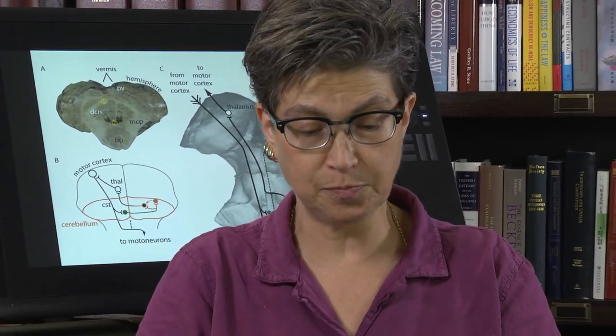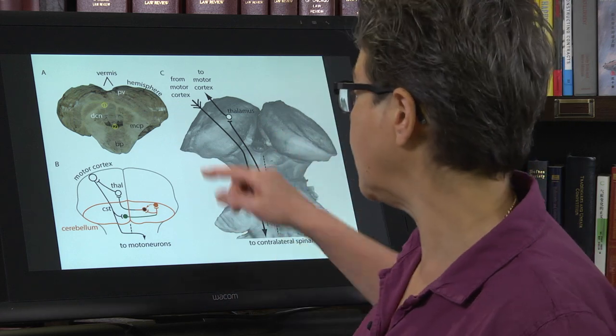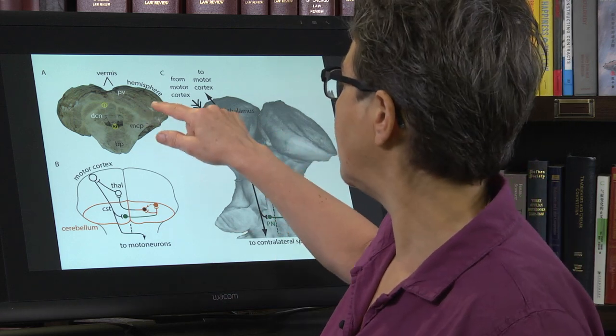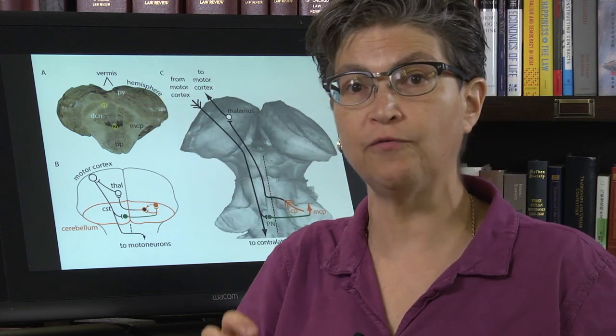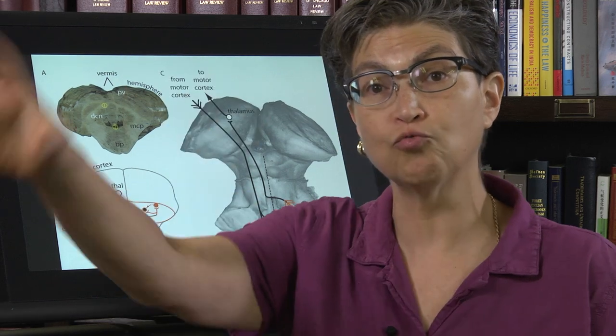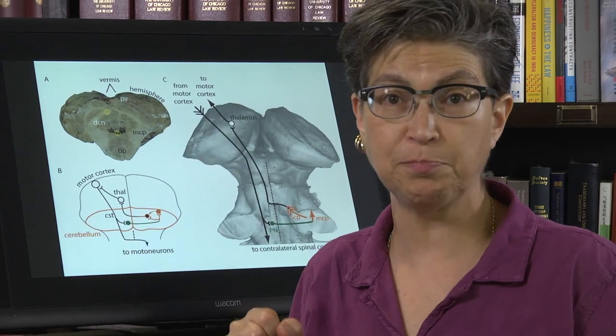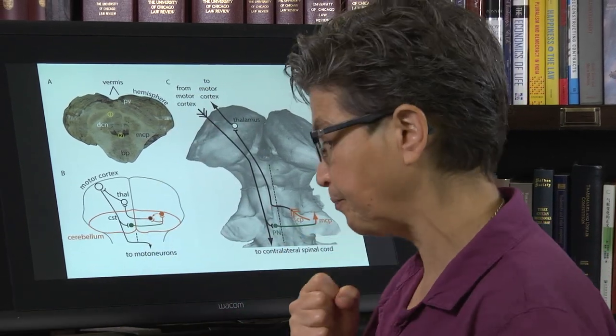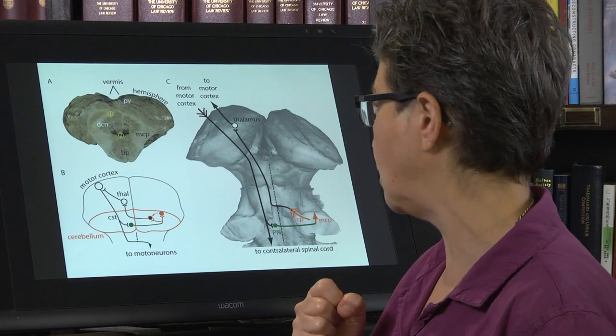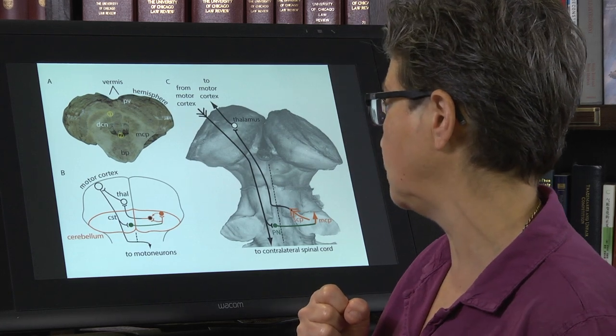In general, the vermis is in charge of midline movements such as gait, speech, and balance — walking. The paravermis is much more involved in reaching and grasping, and hand-eye coordination with the limbs.